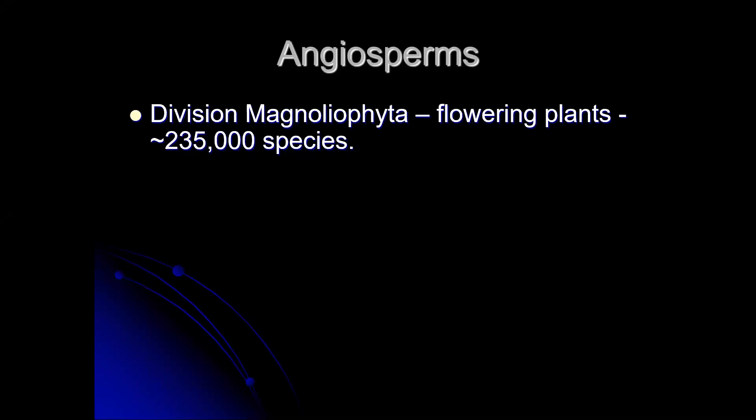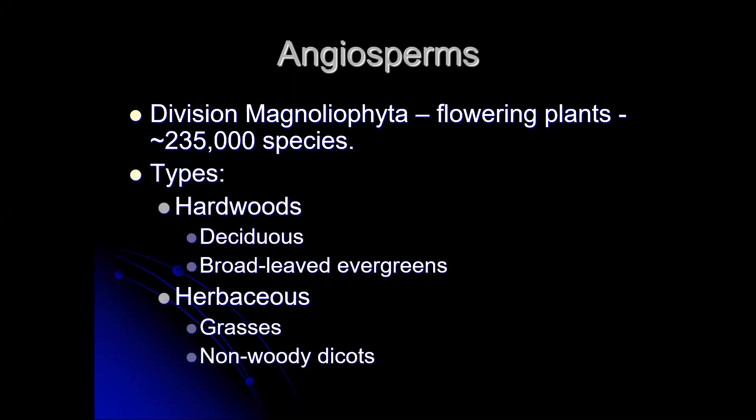Our final group of phyla is the angiosperms, and we have one division in this: magnoliophyta. These are the flowering plants, so everything you see that flowers, and many things that you don't see flowering, actually do flower, belong in this group. Anything we haven't talked about basically already belongs here.